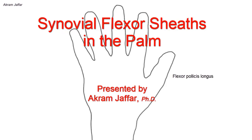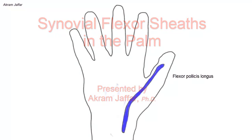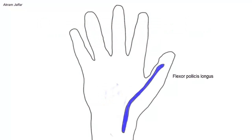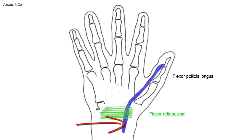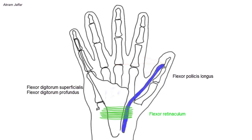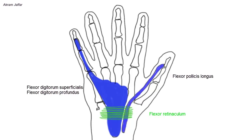The tendon of flexor pollicis longus is surrounded by a synovial sheath which extends from a finger's breadth proximal to the flexor retinaculum to its insertion at the base of the distal phalanx. The eight tendons of flexor digitorum superficialis and flexor digitorum profundus invaginate a common synovial sheath. This sheath extends proximally into the forearm for a distance about a finger's breadth proximal to the flexor retinaculum.